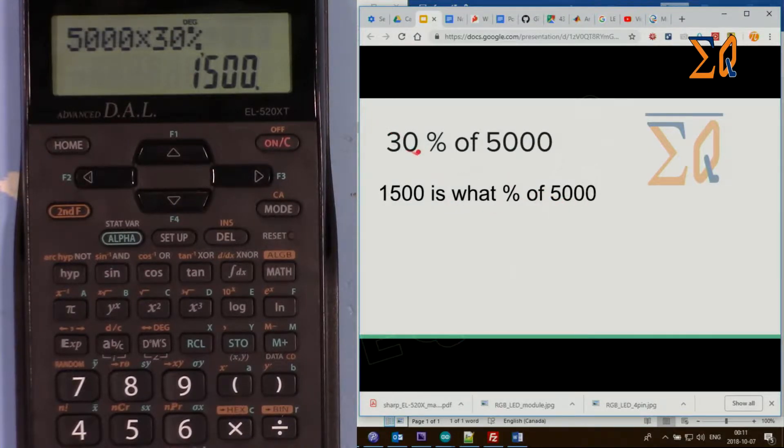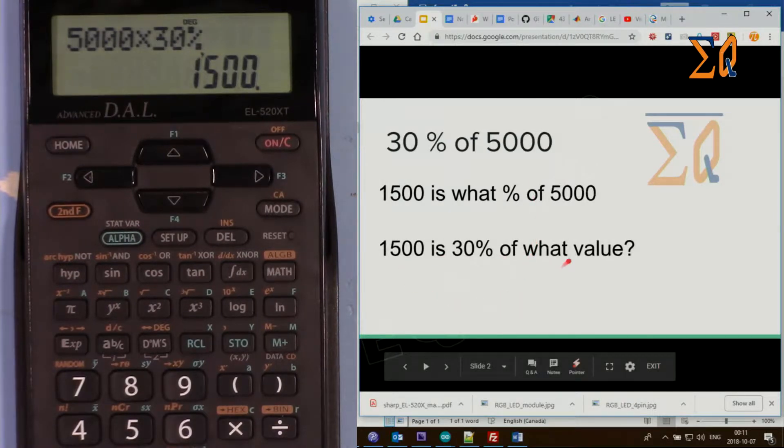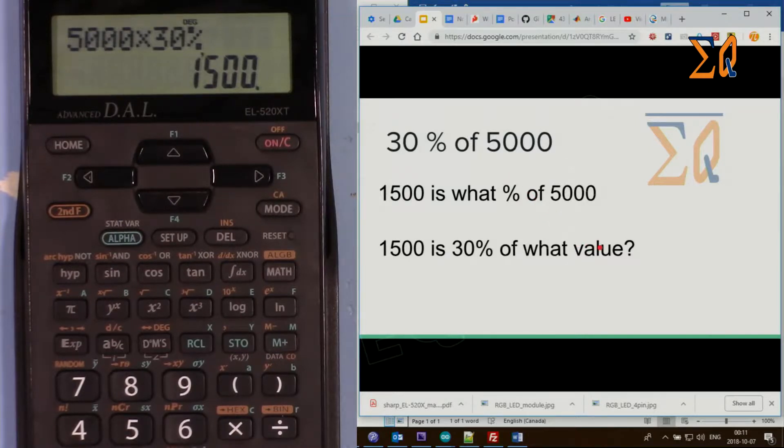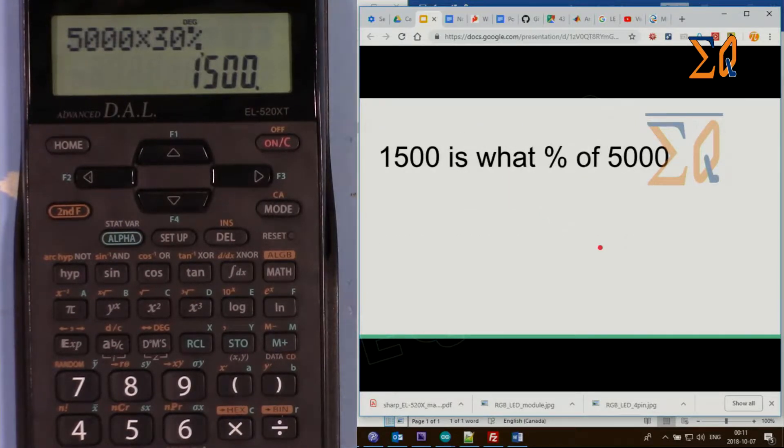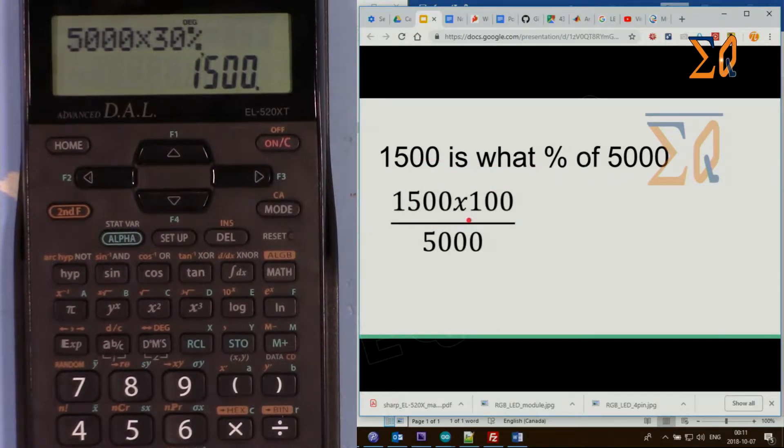And then we will have 1,500 is 30% of what value. In this case we want to get 5,000. So for this one, 1,500 is what percent of 5,000?